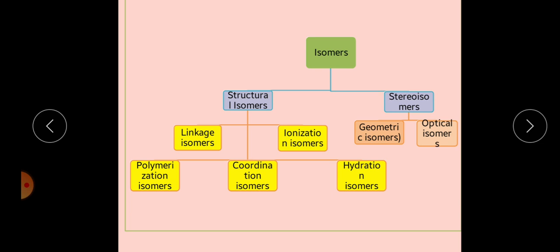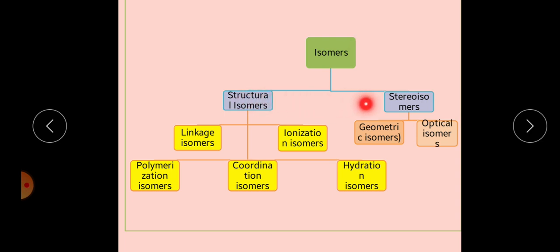In geometrical isomers we study cis and trans configuration, and in optical isomers we study plus and minus isomers, also called D and L isomers, which depend on the direction in which the compound rotates plane polarized light. Structural isomers can be divided into five types: linkage isomers, ionization isomers, polymerization isomers, coordination isomers, and hydration isomers. Stereoisomers are divided into two subclasses.